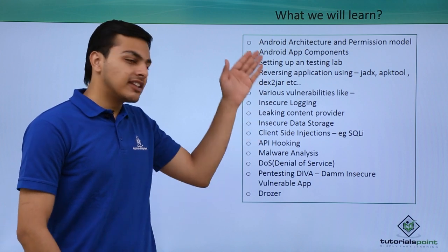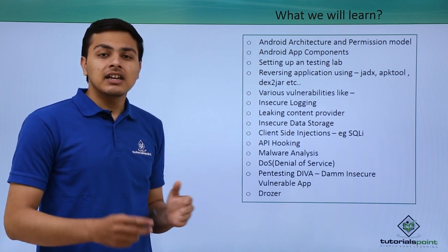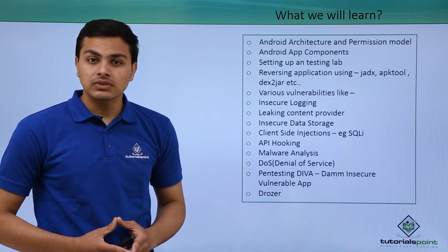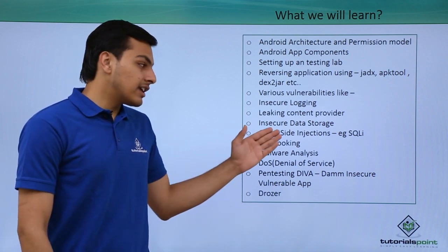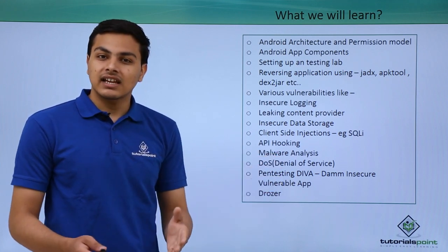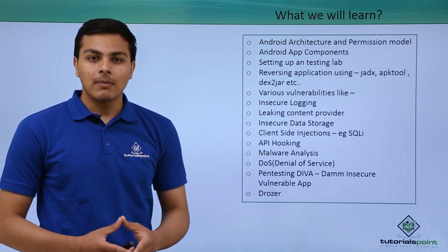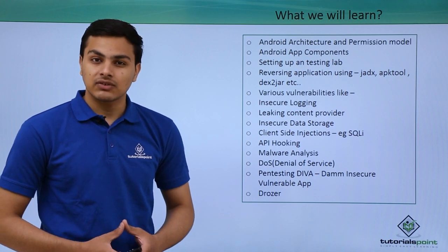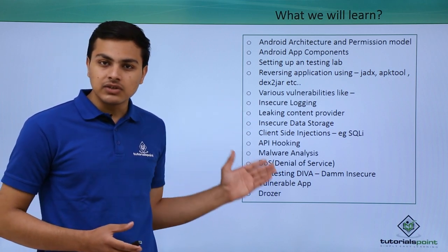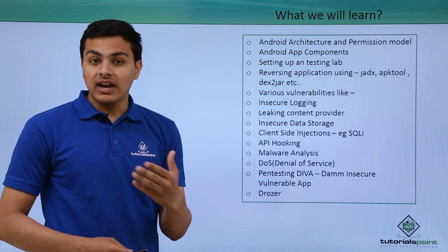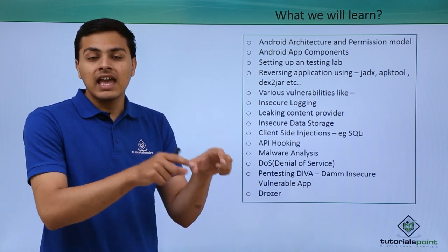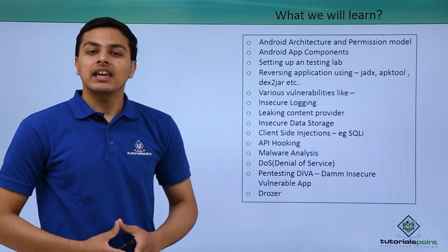Once we complete the basics, we will start exploiting various vulnerabilities and look at issues like insecure logging, leaking content provider, insecure data storage, and API hooking. In this course we will also talk about client-side issues like SQL injection, and once we complete these security issues we will look at advanced topics like API hooking and how we can analyze malware in Android.